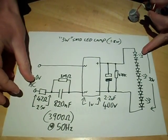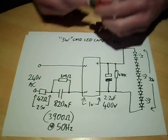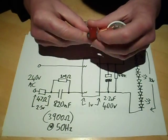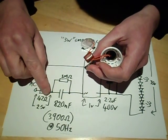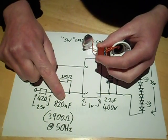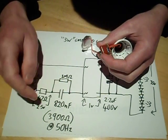Here we go. So, supposedly 3 watt. Mains in, 240 volt in this case. It starts off with a 47 ohm resistor limiting inrush current. An 820 nanofarad capacitor, which is actually quite a high value.